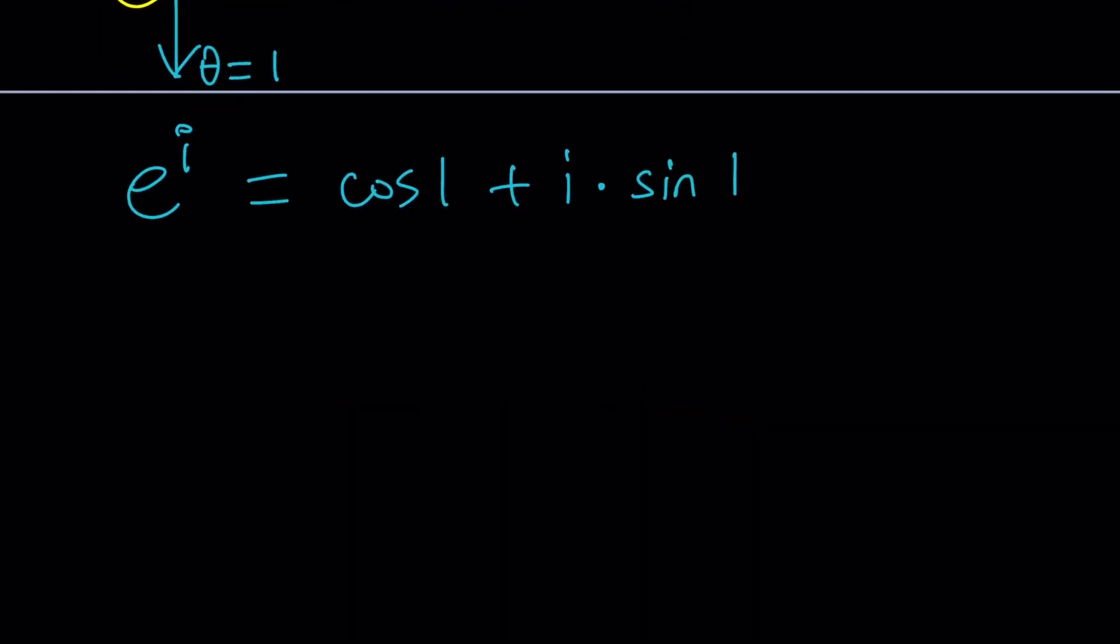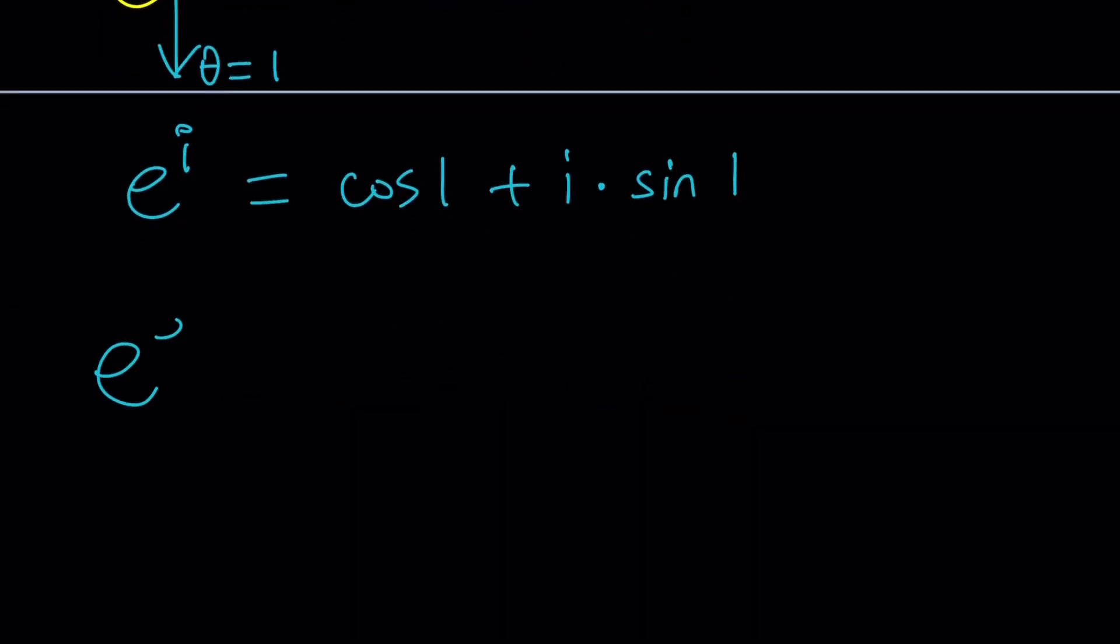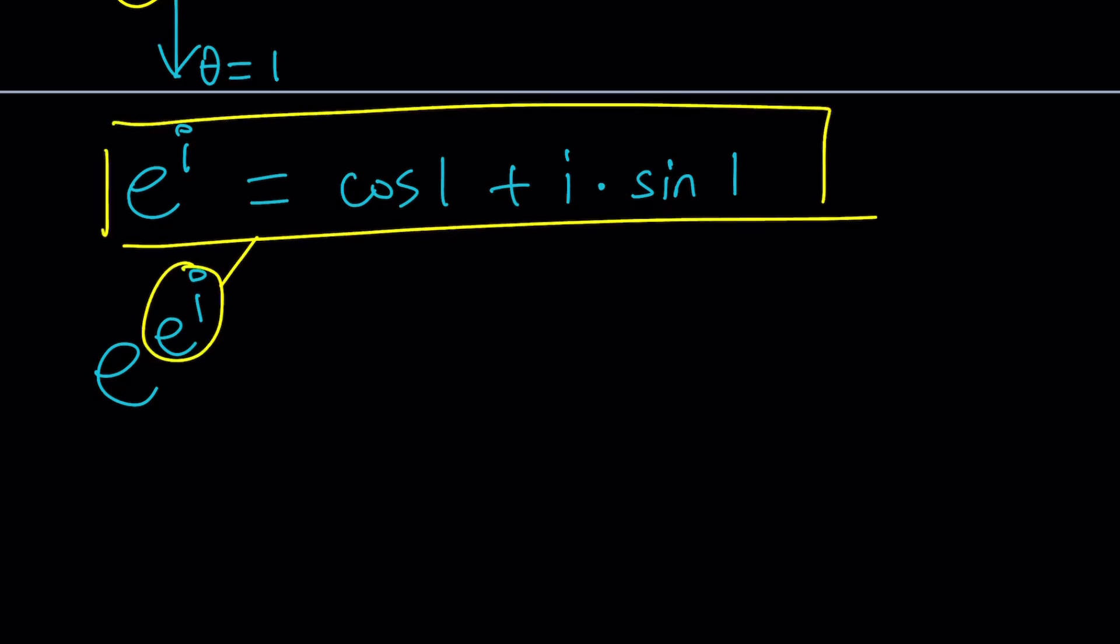And hopefully we can go from this to e to the e to i by way of substitution again. Let's go ahead and plug this in, right? Right here. That's going to give us e to the cosine 1 plus i times sine 1. Beautiful, right?